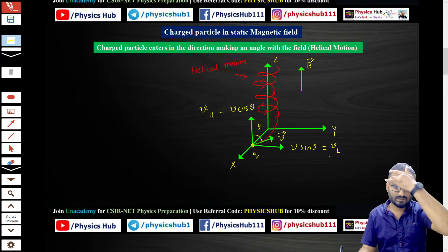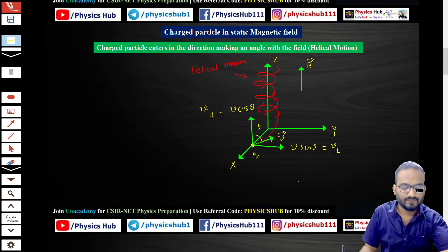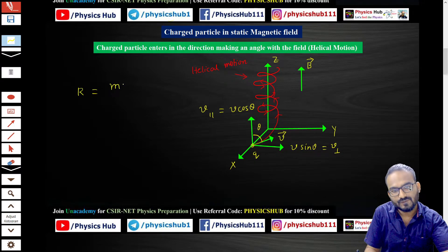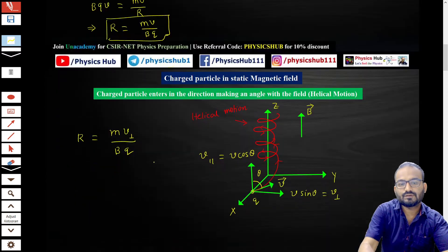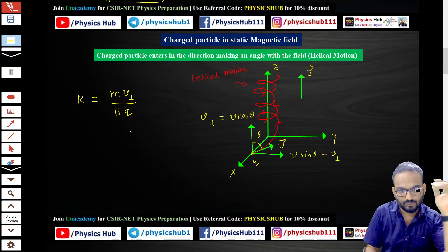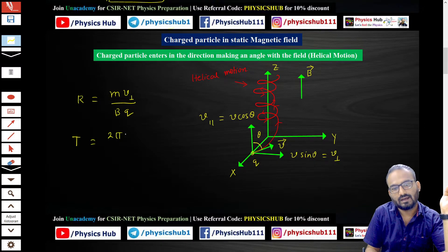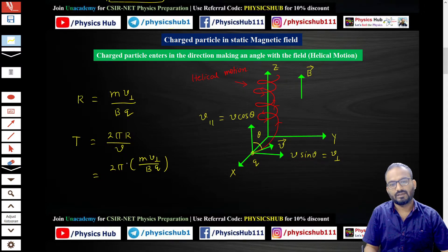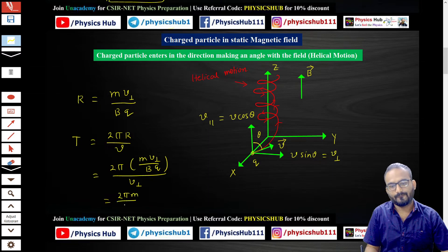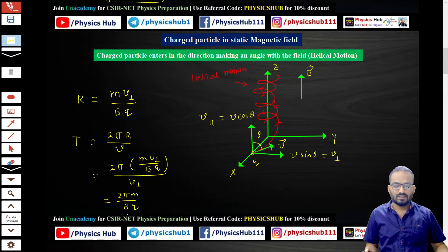The radius of the helical trajectory is r = mv_perpendicular / bq, since v_perpendicular drives the circular motion. For the time period: the circumference 2πr is traversed with velocity v_perpendicular, so T = 2πr / v_perpendicular. Substituting r = mv_perpendicular / bq gives T = 2πm / bq.